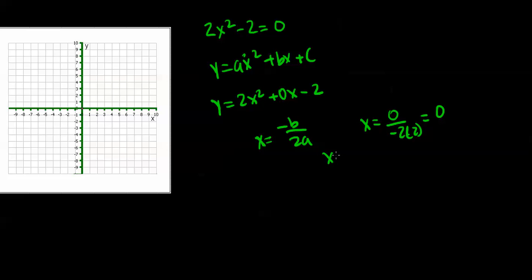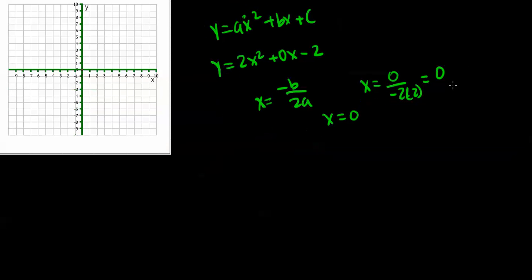Because 0 divided by anything equals 0. We can graph that on the coordinate plane now. x = 0, make a dotted line there.